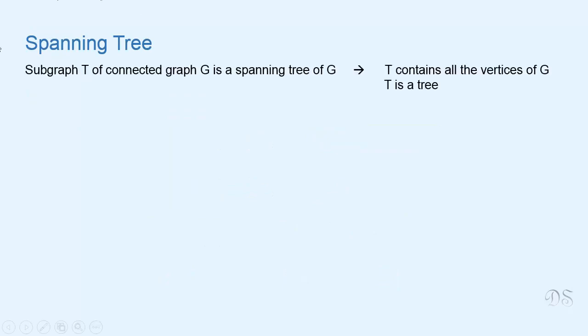Now let's see what is a spanning tree. A subgraph T of a connected graph G is called a spanning tree of G if T contains all the vertices of G and T is a tree.